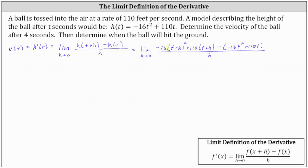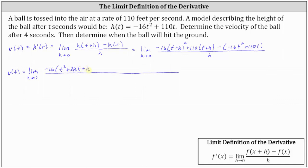Now we need to expand and simplify the numerator. We have negative 16 times the square of the quantity t plus h. The square of the quantity t plus h is equal to t squared plus 2ht plus h squared. You may want to check this.